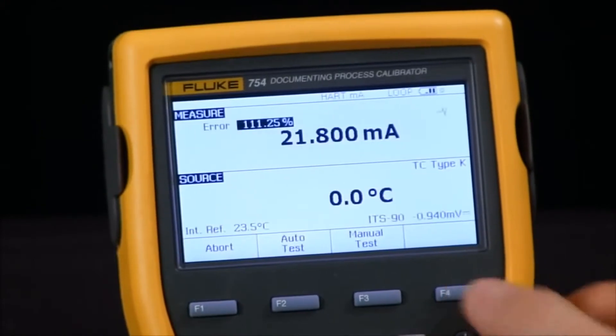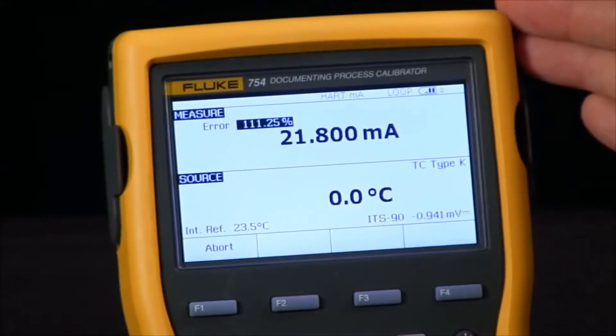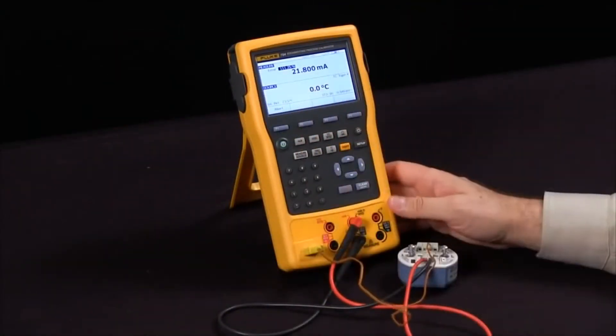What I can do now is just start an auto test and the 754 will source through the thermocouple and it will read back the milliamp values.